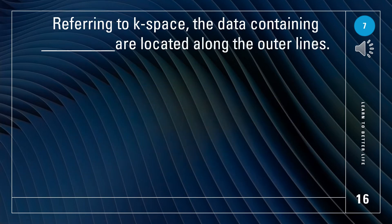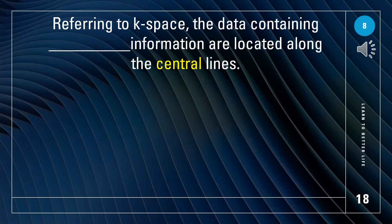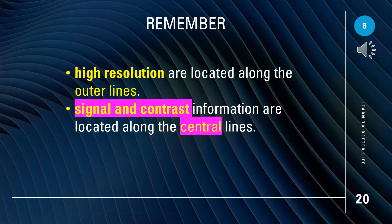Referring to K-space, the data containing what are located along the outer lines? The data containing high resolution. Remember: high resolution is at the outer lines. Also referring to K-space, what information is located along the central lines? Signal and contrast are at the central lines. Remember: high resolution — outer lines; signal and contrast — central lines.